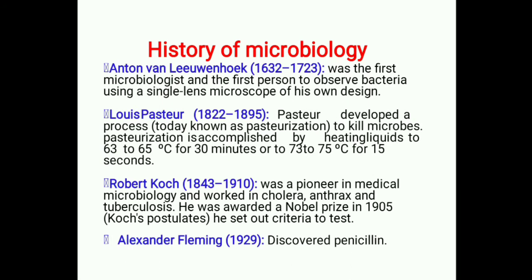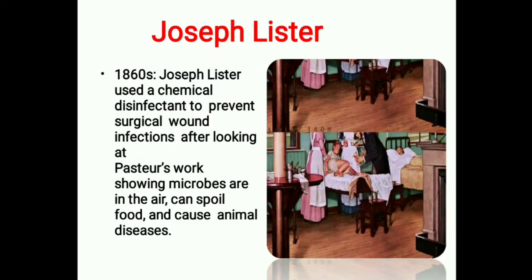Koch postulates — he set out the criteria to test. Next, Alexander Fleming discovered penicillin. Joseph Lister used a chemical disinfectant to prevent surgical bone infections, after looking at Pasteur's work showing microbes in the air can spoil food and cause animal diseases.